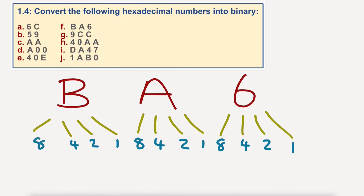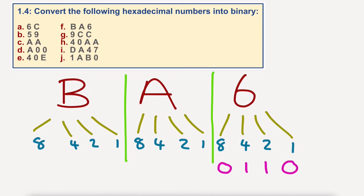So if we were to split this and do it like that, we can work out what the number is — in a nice bright colour. 6, as we did before, would be 0, 1, 1 — that's 4 plus 2 equals 6, then 0. A is 10 in binary, so that would be 8 and 2, then 0, 0.